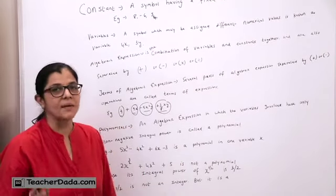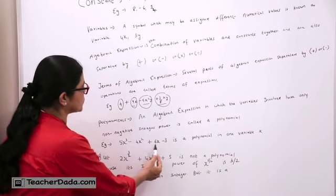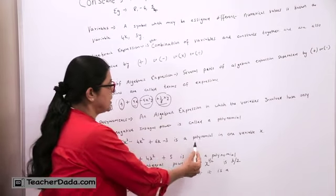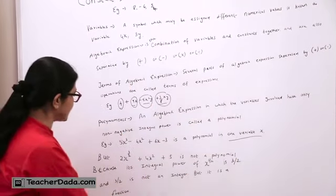I will explain to you with the help of an example. For example, 5X cube minus 4X square plus 6X minus 3 is a polynomial in one variable X. Now see the other example.